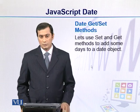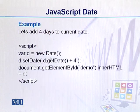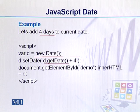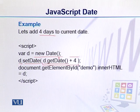Let's use the set and get methods to perform some specific functions. Here we have created a date object, and our objective is to add 4 days to the date. We created the date object from today's date, then used getDate() to get the current date value and added 4 to it. For example, if today is the 9th, we add 4 and it becomes the 13th, and then we set it back using setDate(). The date in the object is specifically changed.